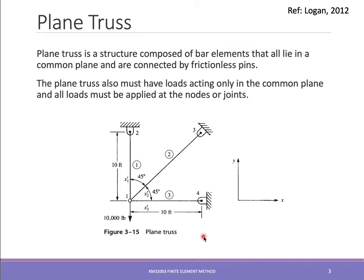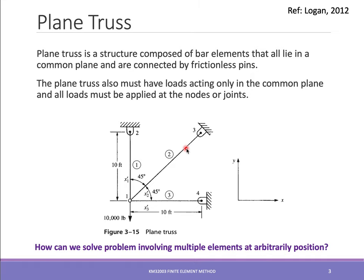A plane truss is a structure consisting of bar elements that lie in a common plane, such as an XY plane, connected by frictionless pins. The plane truss must have loads acting only in that common plane, and all loads must be applied at the nodes or joints only — not along the bar or element itself.